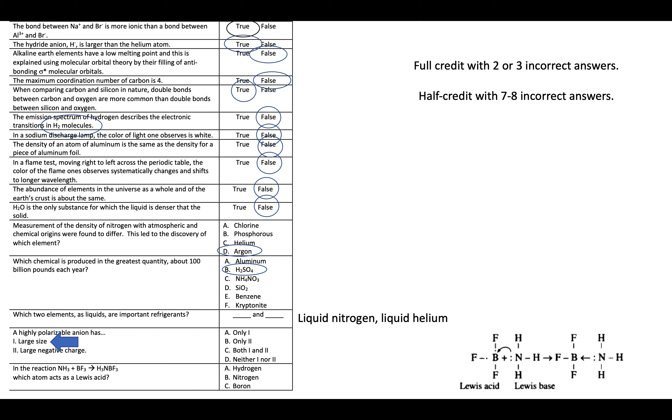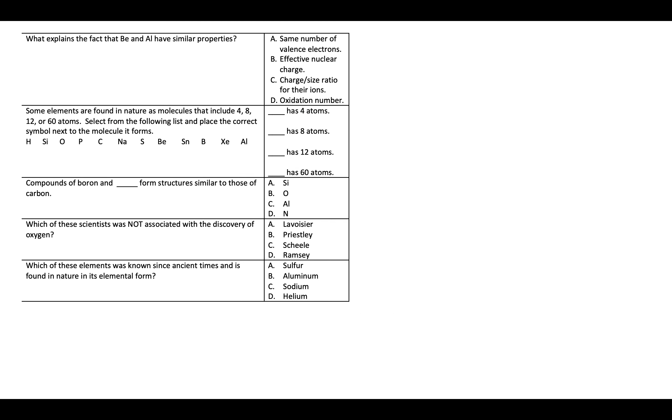When we're thinking about a reaction of NH3 and BF3, the ammonia is acting as a base. The BF3 is acting as the acid, the boron atom there. If we're thinking about beryllium and aluminum having similar properties, it's their charge to size ratio. That was our diagonal relationship.